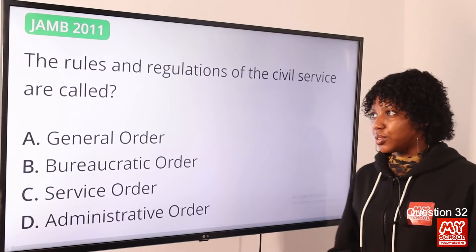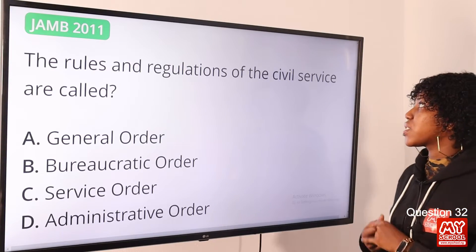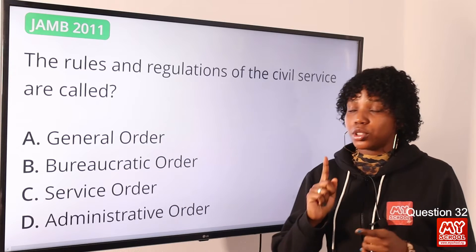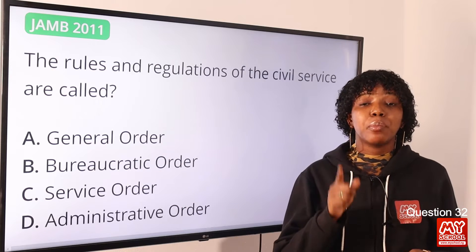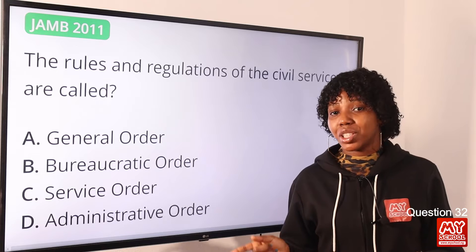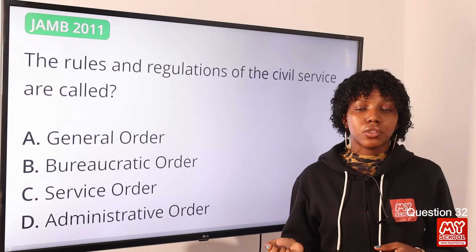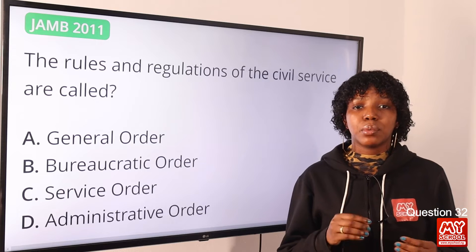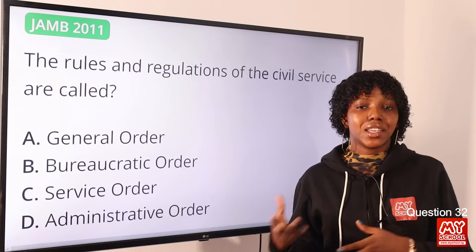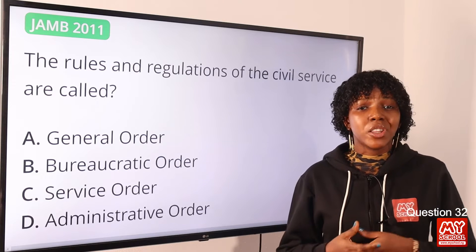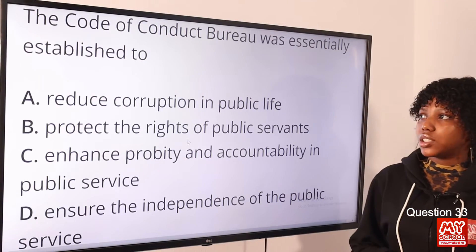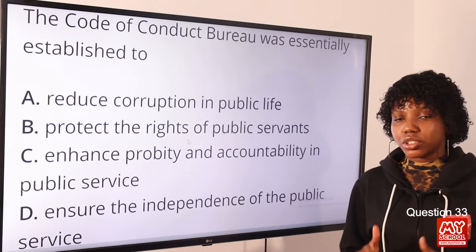Question 32: The rules and regulations of the civil service are called — the answer is option A, General Order. General Order applies to all officials, be it public or civil offices. It constitutes the system in which these offices are engaged or employed.